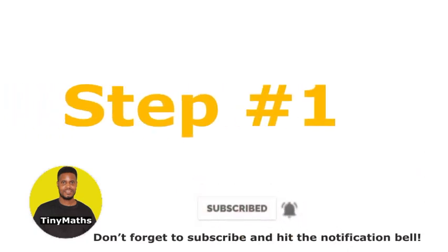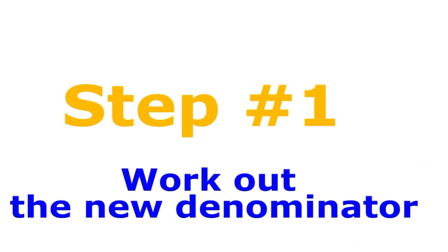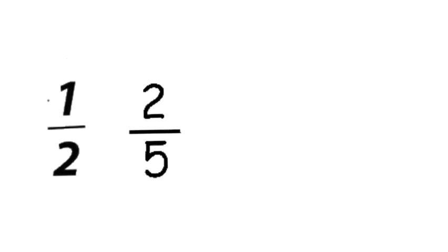The first step is to work out the new denominator. Let's see how we can do that. Let's take two fractions, one-half and two-fifths, and add these two fractions: one-half plus two-fifths.